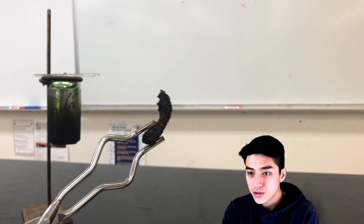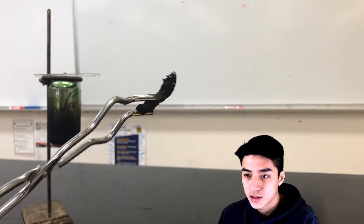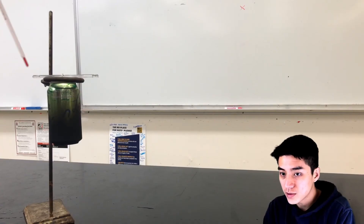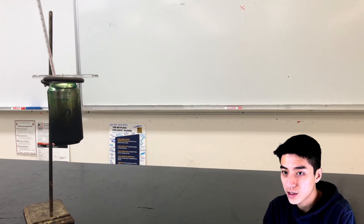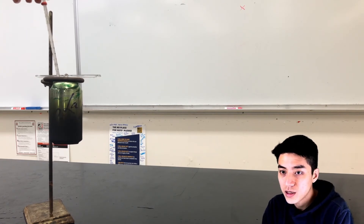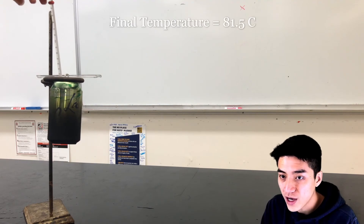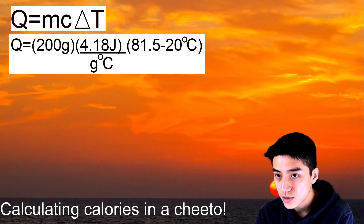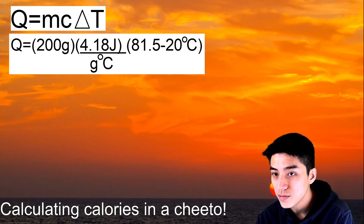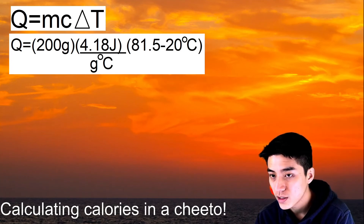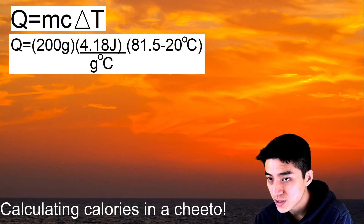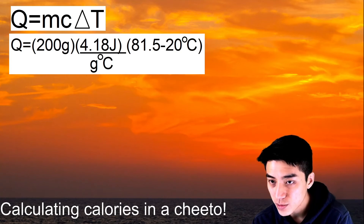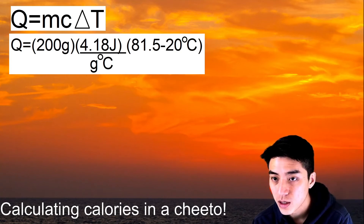The Cheeto has finished burning — that's the Cheeto carcass. All the fat content inside has been burned completely. Now that the Cheeto has released its heat to the water in the can, I can take the final temperature: 81.5 degrees Celsius. Now I go back to my equation Q equals mcΔT, where m represents the mass of the water, c represents the specific heat of the water, and delta T is the change in temperature. I just need to plug in the values measured during the lab.